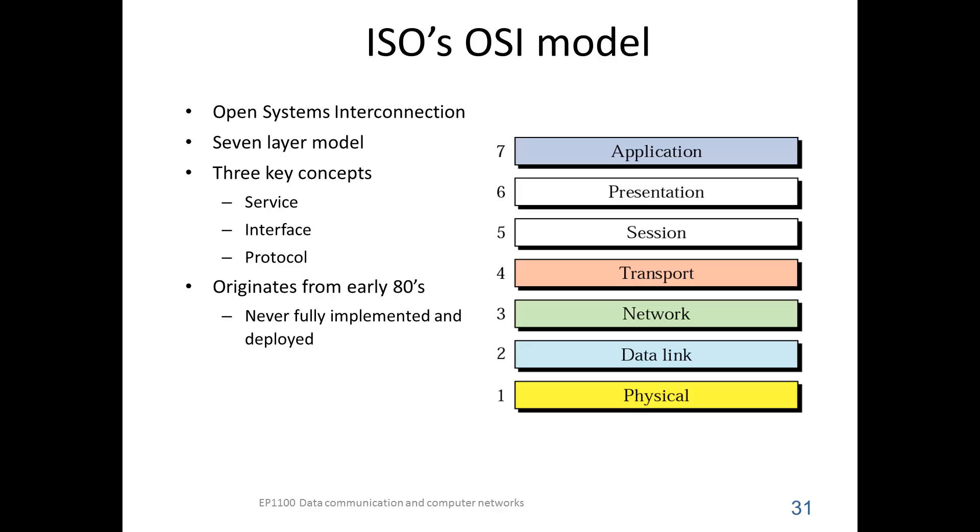The International Organization for Standards has defined the Open System Interconnection Model. It's a seven-layer model. The layers are numbered from one to seven, with the first layer being in the bottom. It's the physical layer,